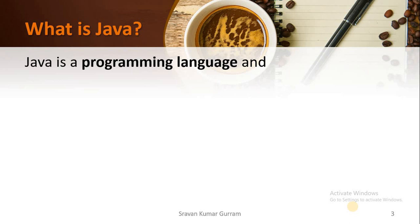So many programming languages exist in the market, for example C, C++, Python, Smalltalk, and others. Java is also one of the programming languages, and it is a high-level programming language. High-level means the words we use to develop code in Java are probably near to the English language, which can be understood by humans easily.